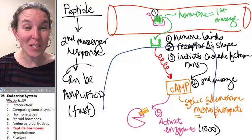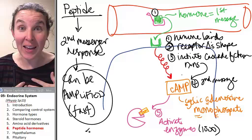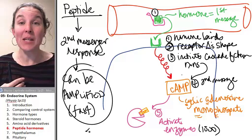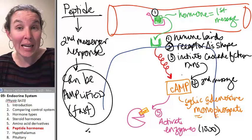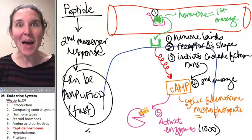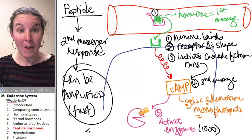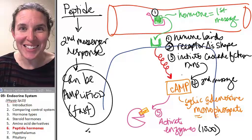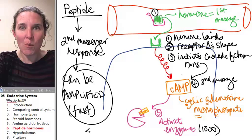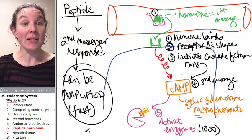Now, since the response can be amplified and it's fast, think back to the amino acid derivatives that had a peptide hormone-like mechanism. That means that your adrenaline, your epinephrine and norepinephrine, these guys have a very fast and amplifiable effect on the cell. Dude, that's perfect.